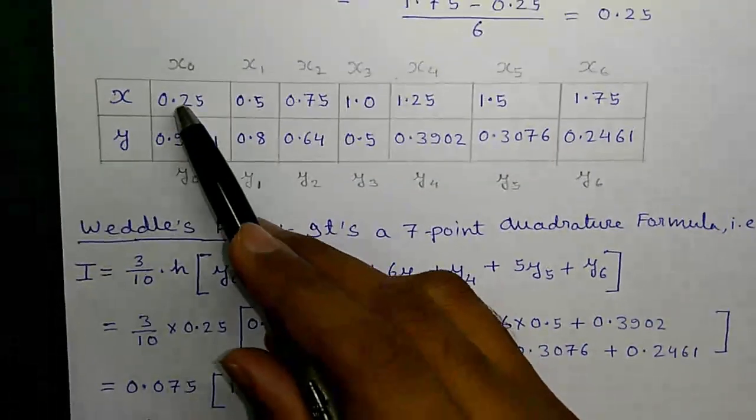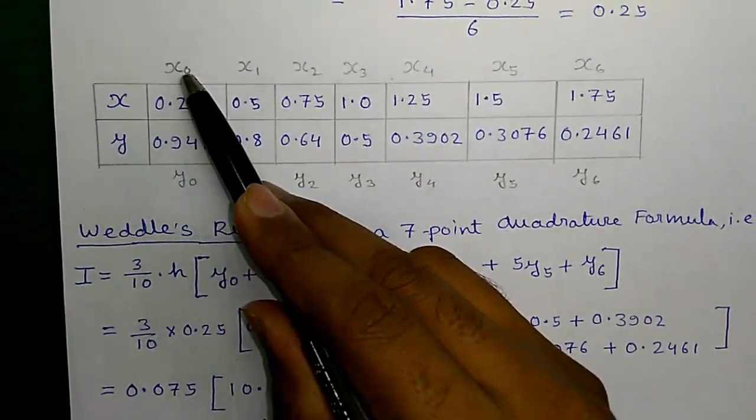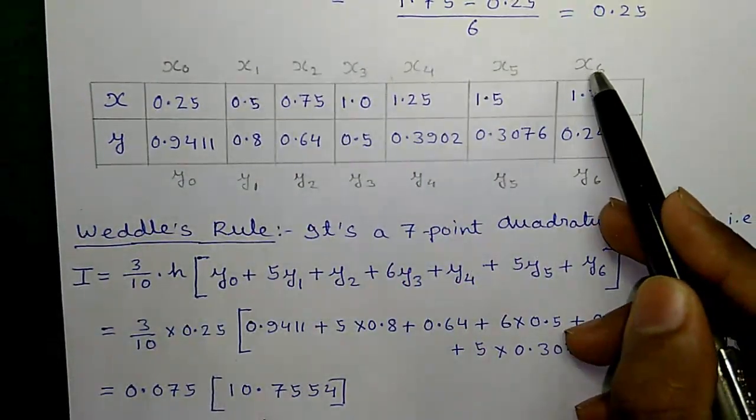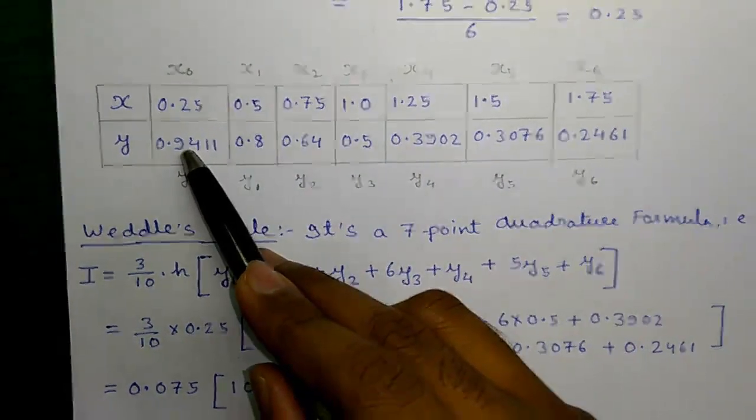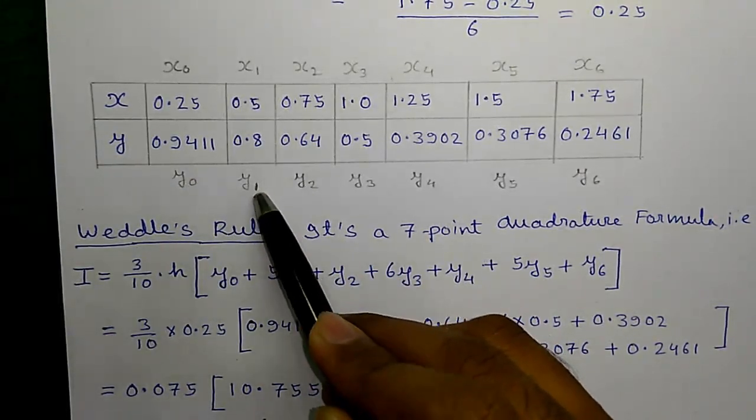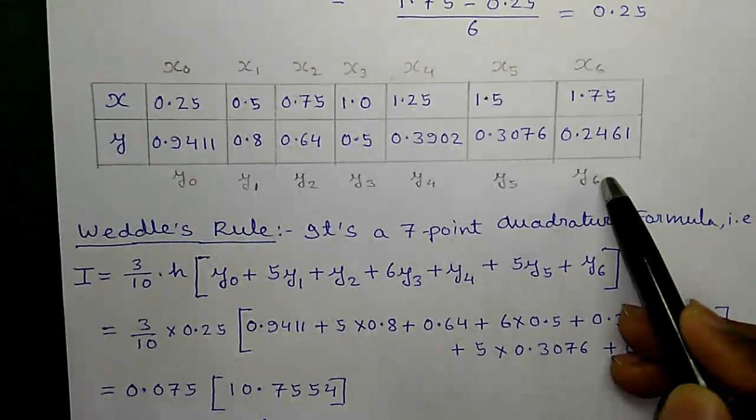Next, the first value of x is known as x0. Next value of x is known as x1 and so on up to x6. Similarly, first value of y is known as y0. Next value of y is y1 and so on up to y6.